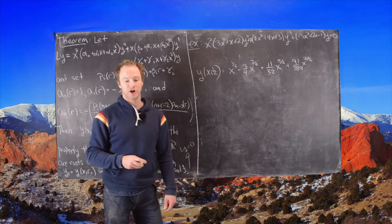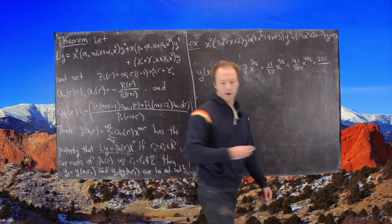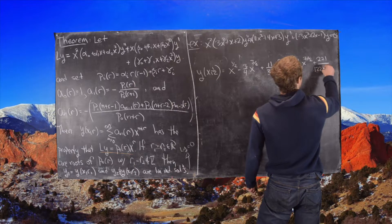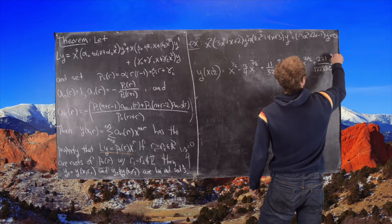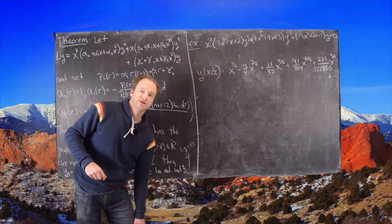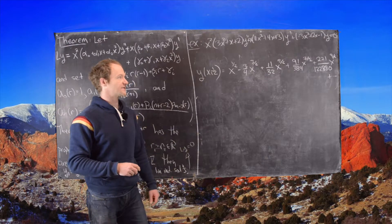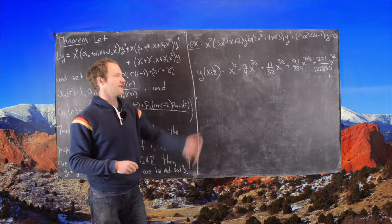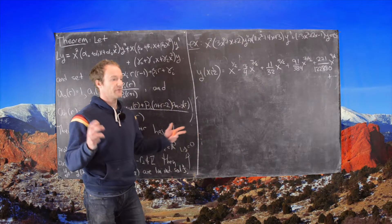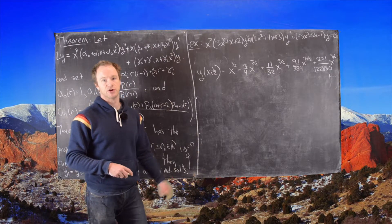And then for good measure, I'll do one more. And that will be plus 221 over 12,288 and then that's x to the 9 halves. And then I have plus dot dot dot. So like I said, given that recursion that we had before, there's no nice closed form for these coefficients. But this is like the Taylor polynomial. It's not quite a polynomial, but the Frobenius polynomial, if you will, that approximates the solution.